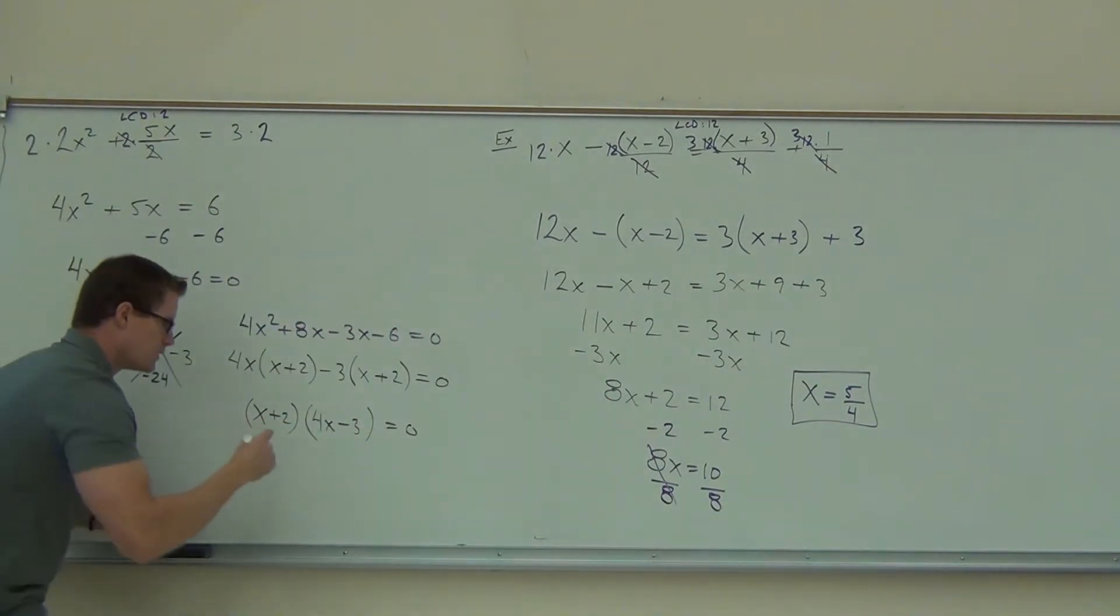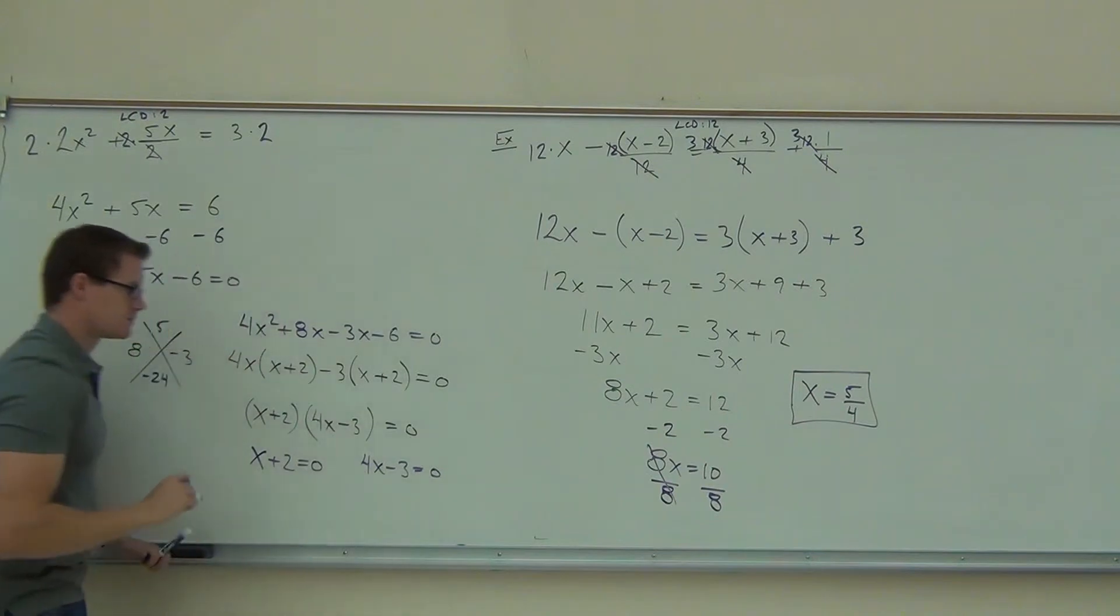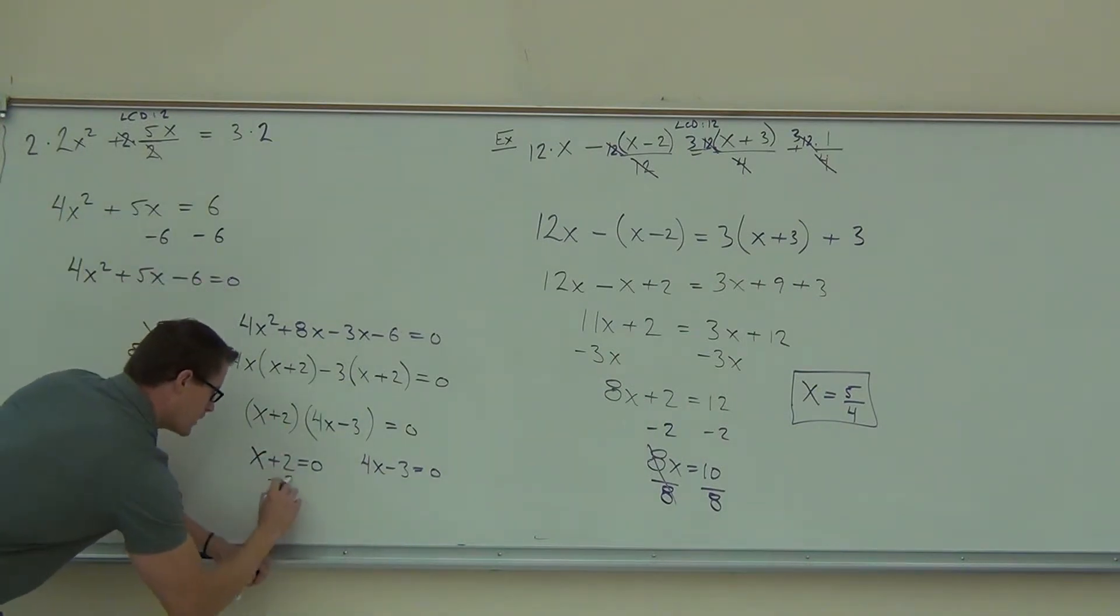We're going to set not only the x plus 2 equal to 0, but we're also going to set the 4x minus 3 equal to 0. Do a little Harry Potter math magic on this thing. Bam! We'll get the answer by some simple algebra. We'll get x equals negative 2. That's one answer.